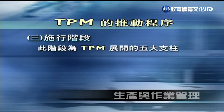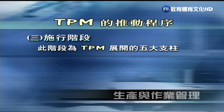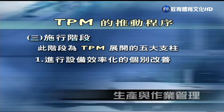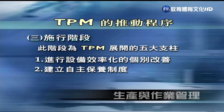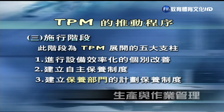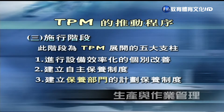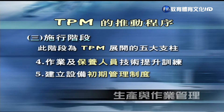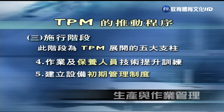第二阶段是导入阶段，要依序进行TPM各项实际活动的规划。第三阶段是实行阶段，TPM有五大工作要做：第一，进行设备效率化的个别改善；第二，建立自主保养制度；第三，建立保养部门的计划保养制度；第四，提升作业及保养人员的技术训练；第五，建立设备初期管理制度，在设备购入初期就把问题彻底解决，到正常运转时能获得最佳的设备综合运转效率。